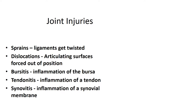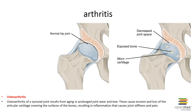Bursitis, tendinitis, and synovitis all refer to inflammation — whether it's inflammation of the bursa, inflammation of a tendon, or inflammation of the synovial membrane. Arthritis is an inflammatory or degenerative disease of the joint where synovial membranes thicken and fluid production decreases, resulting in friction and pain. Arthroscopic surgery may be necessary to treat joint injuries, or artificial joints may need to be installed when a joint is damaged beyond repair.